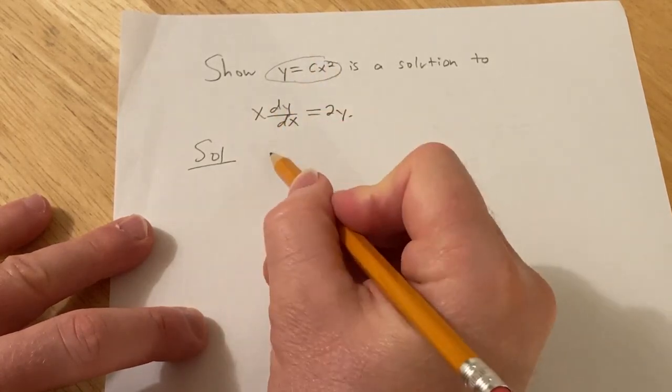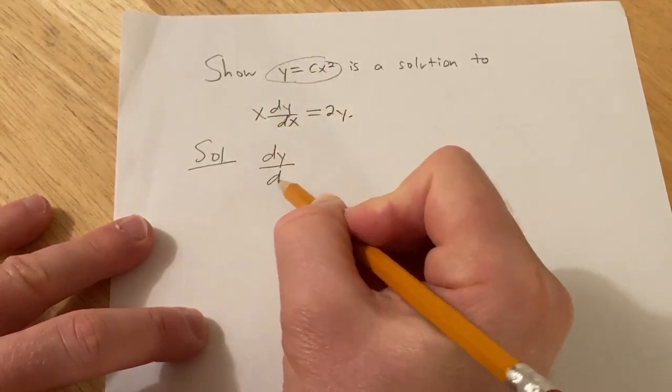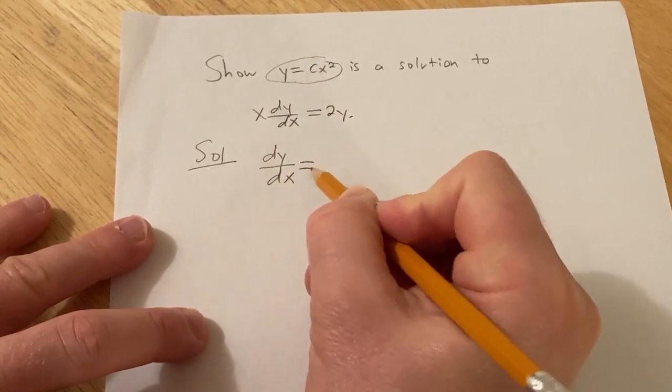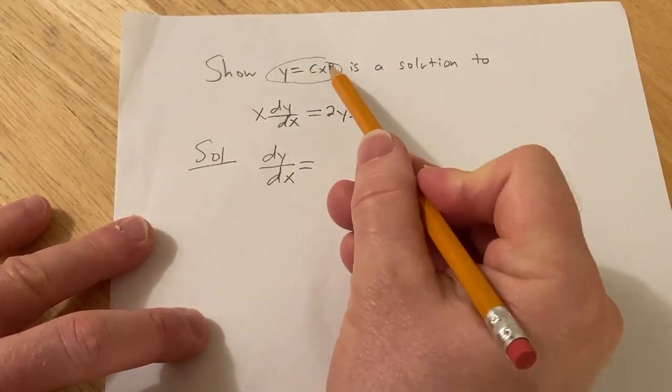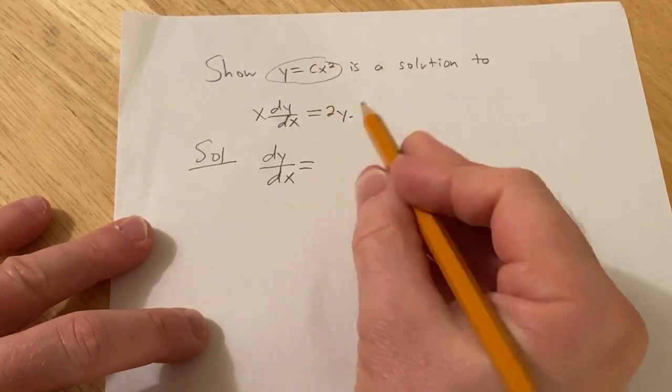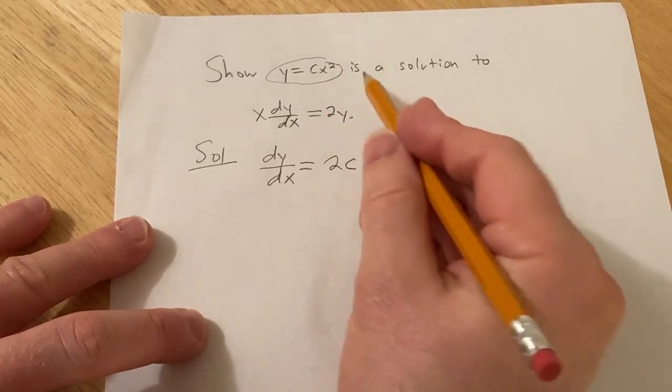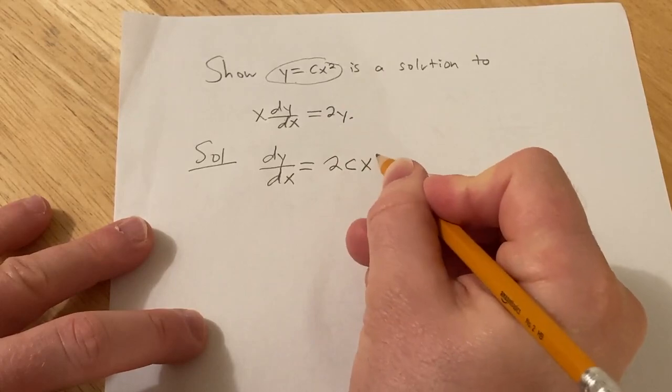So y is equal to cx squared. So dy dx is the derivative with respect to x. Here what we'll do is we'll take the derivative, we'll put the 2 in the front and then subtract 1 from the x so you get that.